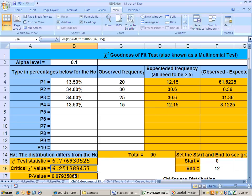And then what we get is a test statistic of 6.77, which is just barely bigger than this critical value of 6.25. This is the critical value you have if you have an alpha level of 0.1. The p-value is 0.079, which is less than 0.1, but it's not less than 0.05.